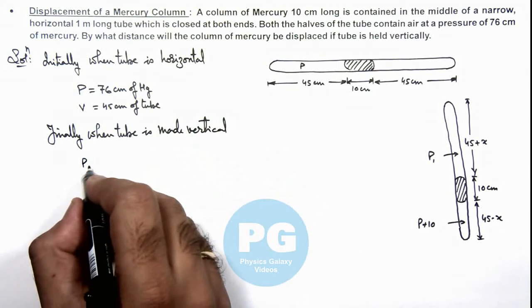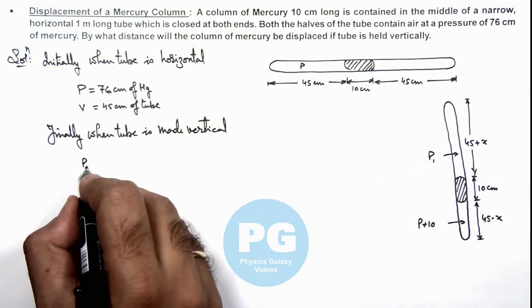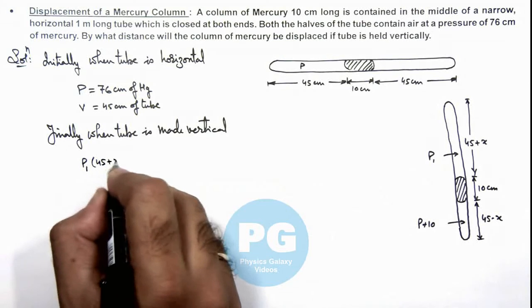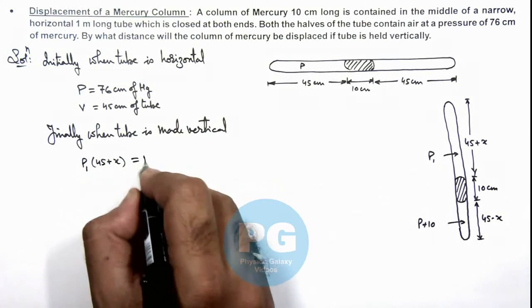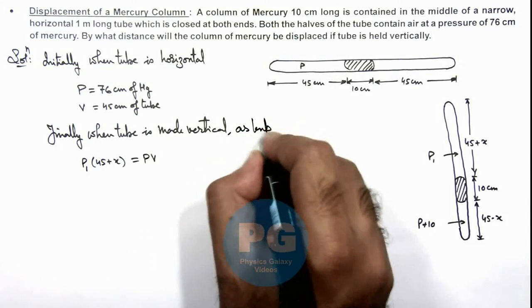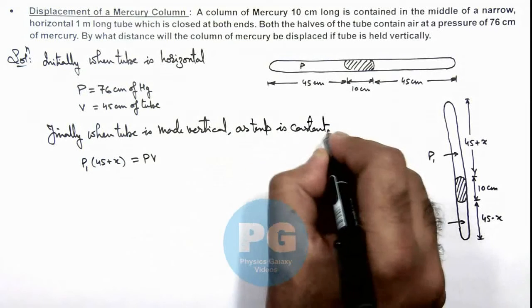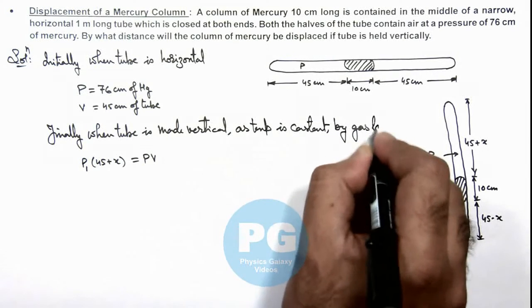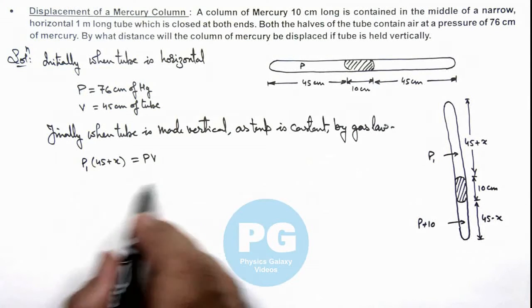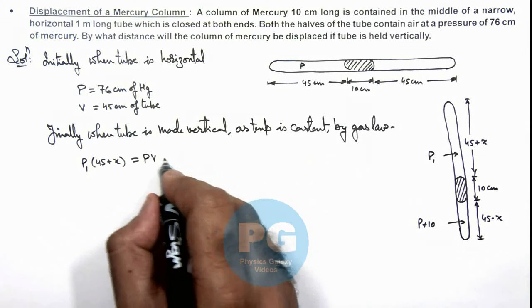P1 for the upper part we can take up it is p1, and the volume here is 45 plus x must be equal to initial p v. Here we can write as temperature is constant, then by gas law we can write p1 v1 as p2 v2, so this is the relation which we are getting, say this is equation 1.